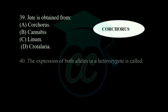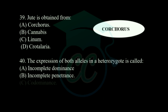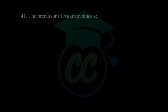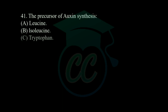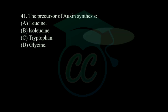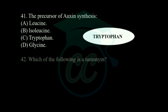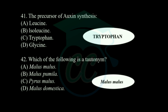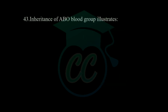Next question: jute is obtained from — options: Corchorus, Cannabis, Linum, and Crotalaria. The correct answer is Corchorus. Next question: the expression of both alleles in a heterozygote is called — options: incomplete dominance, incomplete penetrance, co-dominance, and variable expressivity. The correct answer is co-dominance. Next question: the precursor of auxin synthesis — options: leucine, isoleucine, tryptophan, glycine. The precursor for auxin synthesis is tryptophan.